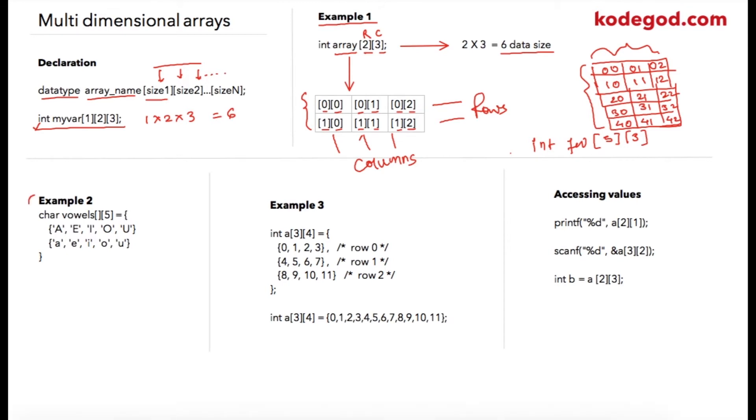Let us take one more example. In example 2 we are declaring a character array. It's a two-dimensional array. For simpler understanding we are initializing the variables like this: so this is my first row and this is the second row.